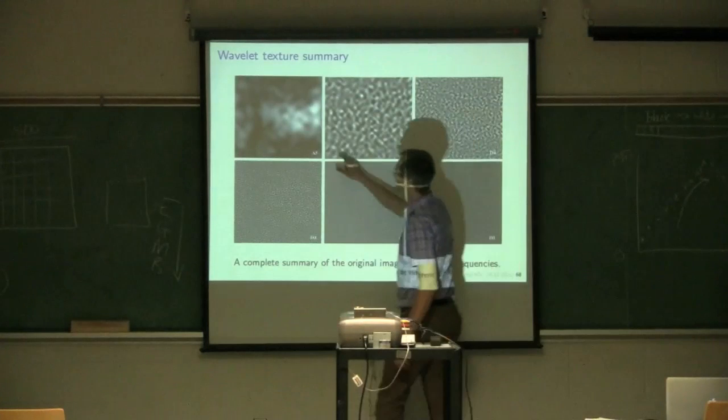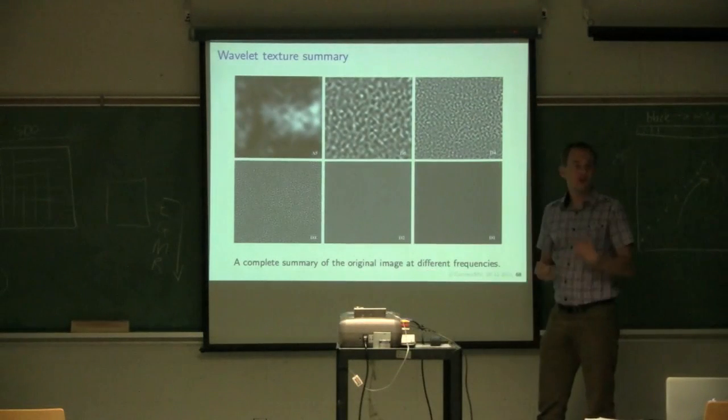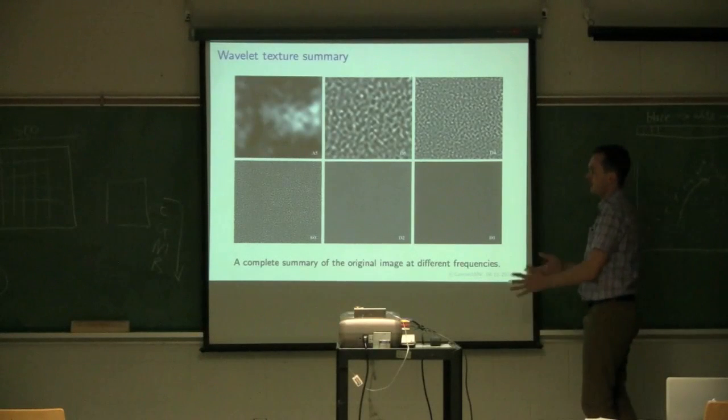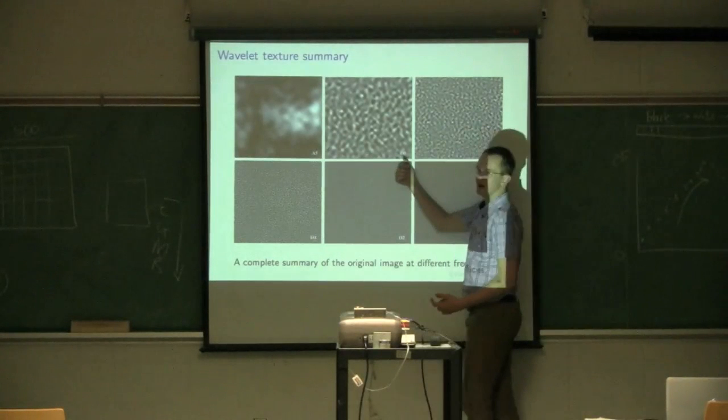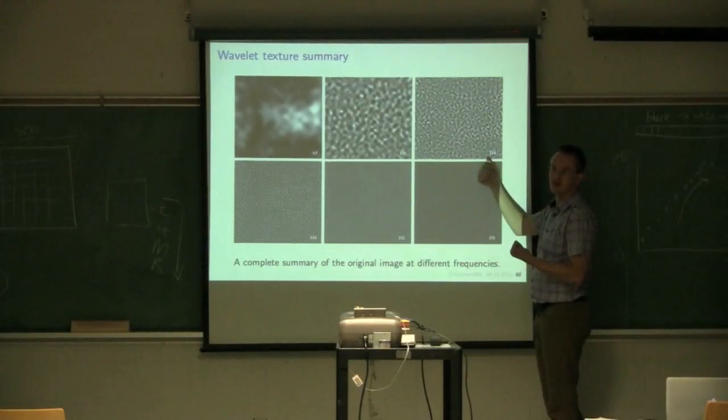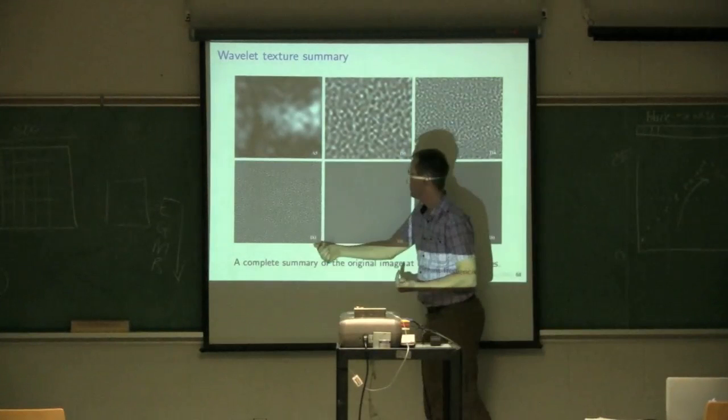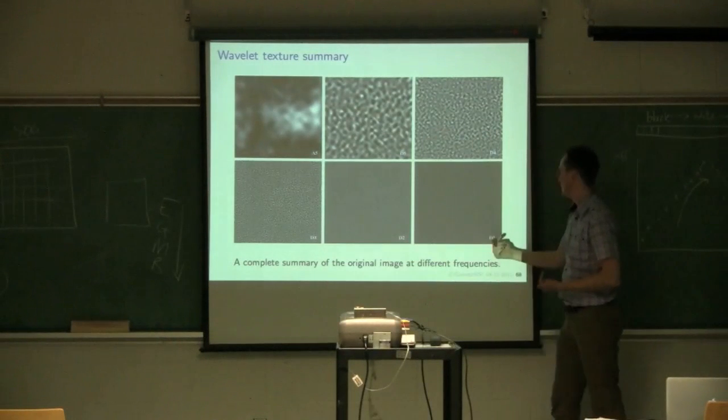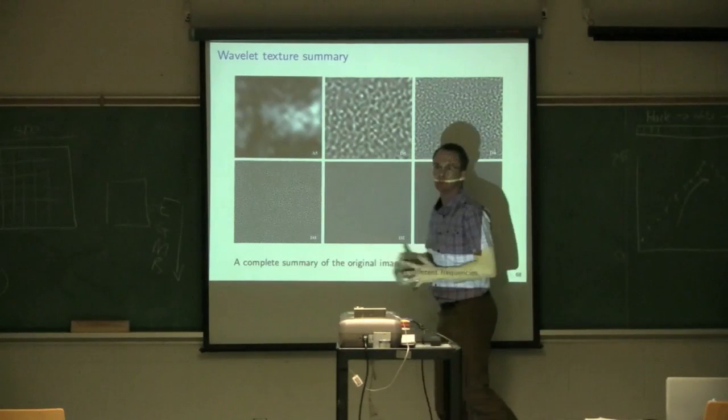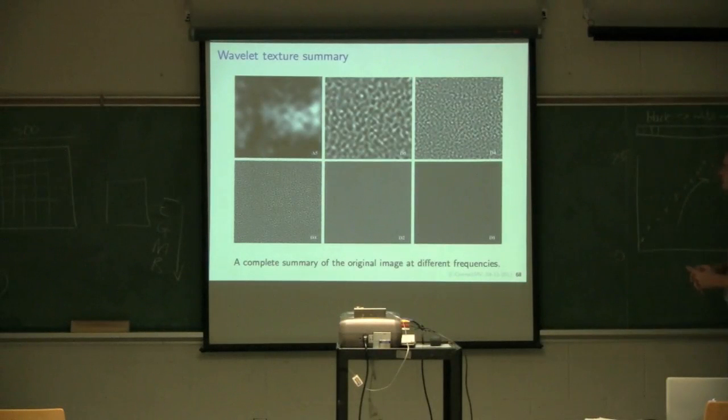But once you calculate these approximations and details, that definitely sticks out. Now, we can go, these six images shown here are really just a complete summary of the original image. If I combine A5 with D5, I get A4 back. Once I have A4, I combine it with D4 to get A3. Then A3 combined with D3 gets me A2, which combined with D2 gets me back to A1. And A1 plus D1 gets me back to my original image.